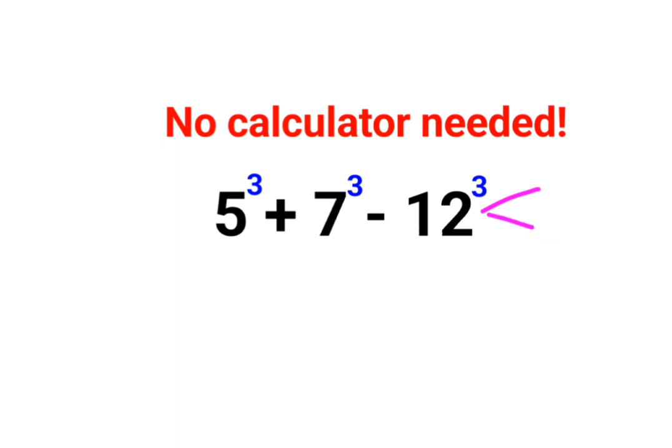And that trick over here is that 12 can be written as 5 plus 7. So basically we have this as a³ - let's take 5 as a³ plus 7 as b³ minus (a plus b) the whole cube.